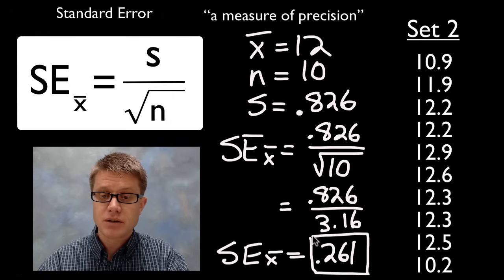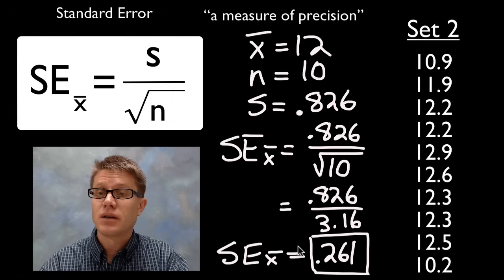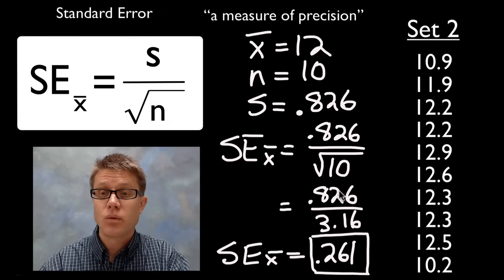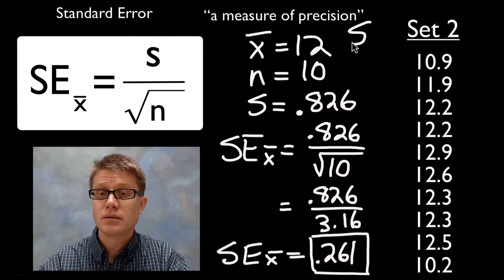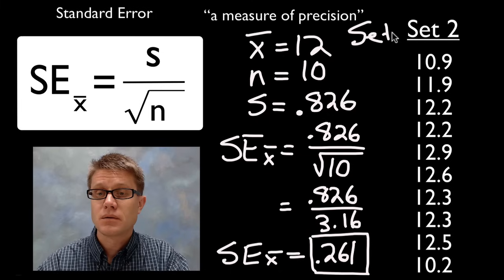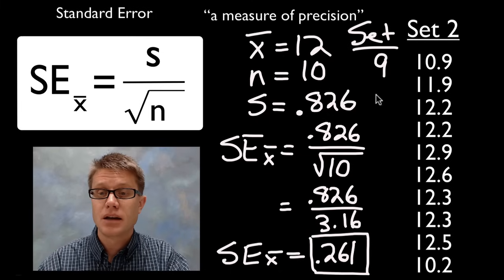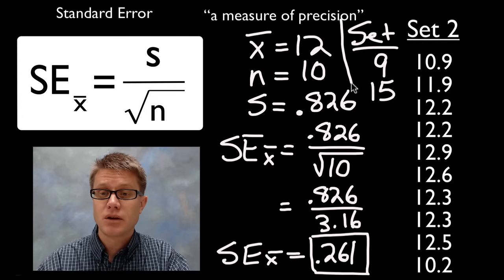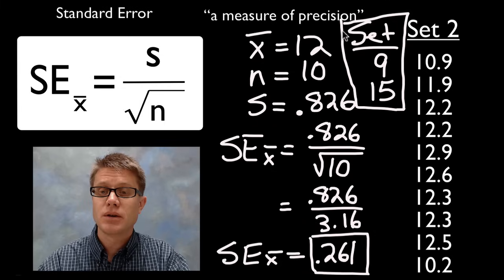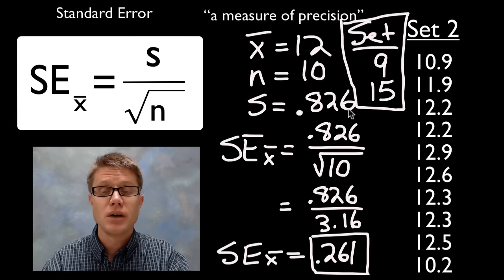You can figure out the standard error of data set 1. Remember, in data set 1 we simply had two values: 9 and 15. So if you want to figure out the standard error of those to make sure you're doing it right, you can do that, and I'll put the values down below.